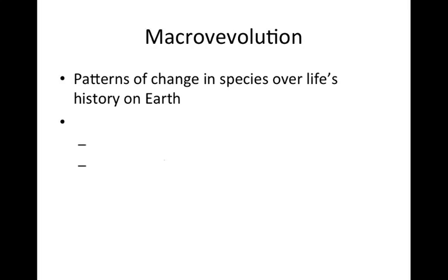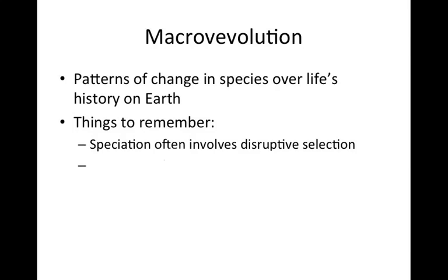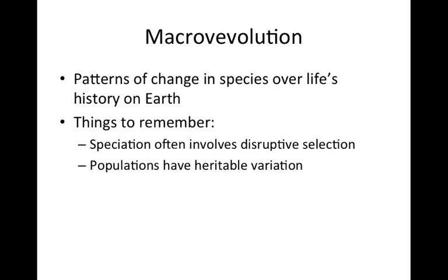To recap: speciation often involves disruptive selection that breaks one ancestral population into two reproductively isolated populations — selection away from an intermediate form and towards two extremes. Also, populations have variation that allows them to take advantage of a variety of situations. That heritable variation is a key element in the forming of new species, and the patterns we look at in the fossil record are related to speciation.